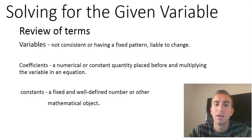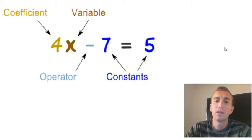Remember, the variable is usually a letter, typically x or y, and it's not consistent or having a fixed pattern and it's liable to change. Coefficients are a numerical or constant quantity placed before and multiplying the variable in an equation. In constants, they're a fixed and well-defined number or other mathematical objects. Typically, the constants are just the numbers that stand alone by themselves.